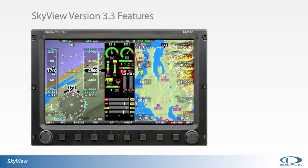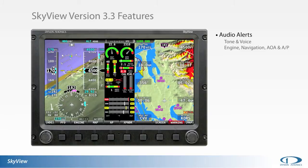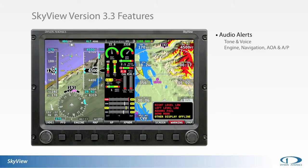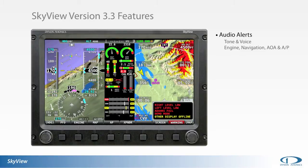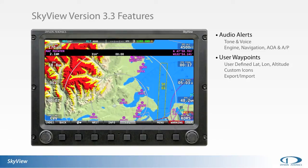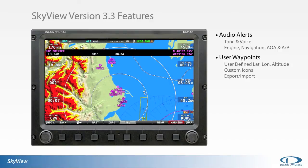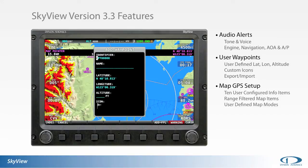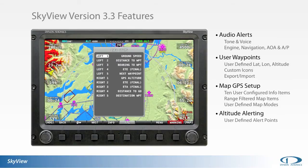Highlights of version 3.3 include audio out alerting along with refined warning and caution messaging, a new powerful user waypoint interface, moving map GPS navigation information boxes, and pilot selectable altitude alerts.